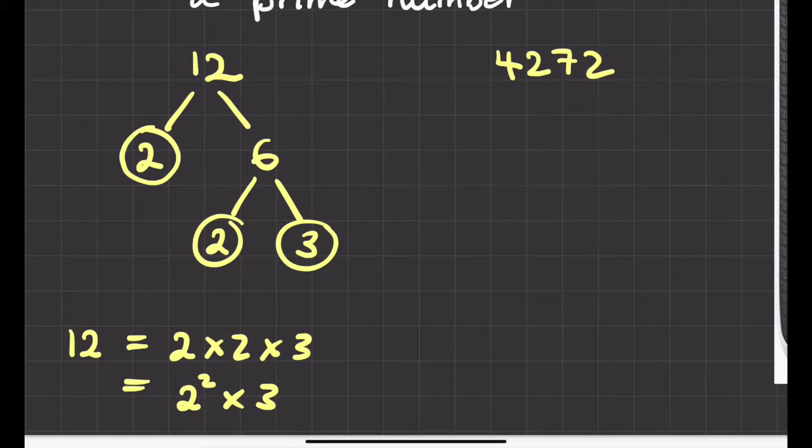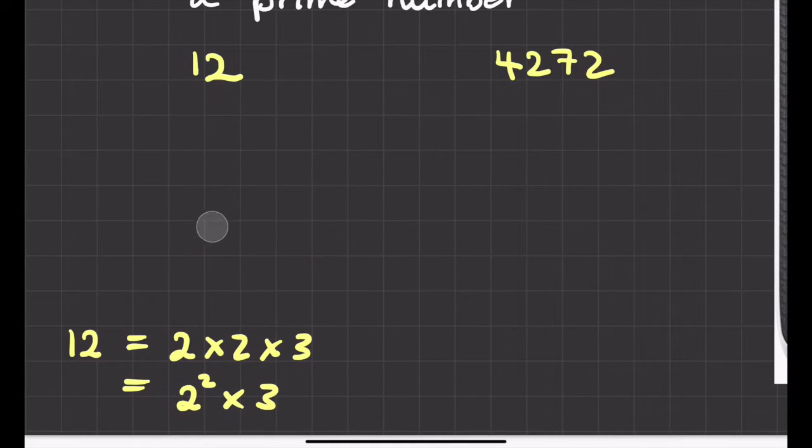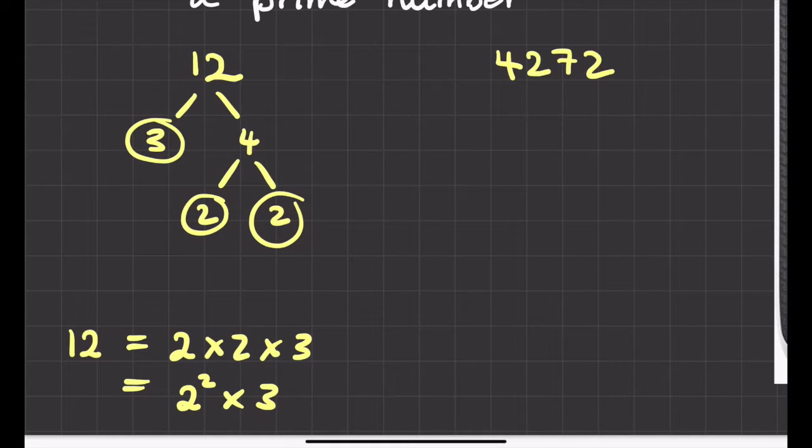I could have drawn a different factor tree, couldn't I? I could have done one which was 3 times 4. And 4 could be split up into a 2 times 2. And you'll see we've still got the same numbers, haven't we? We've got a 2, a 2 and a 3. And so we're still going to have 2 squared times 3 as our product of our prime factors for that number.